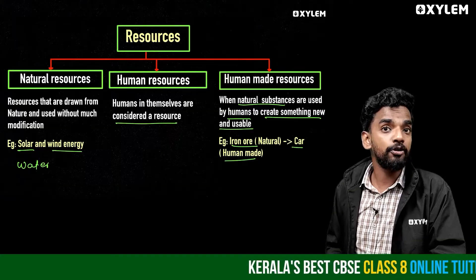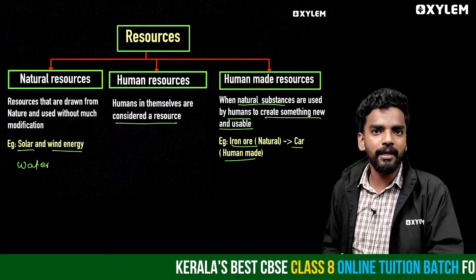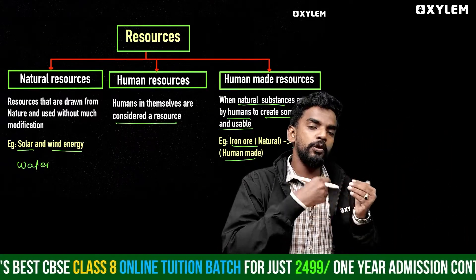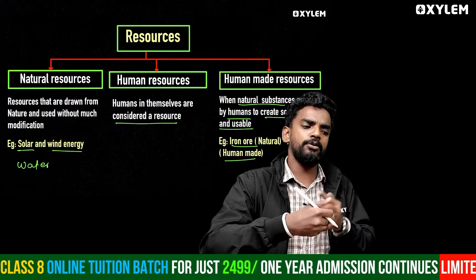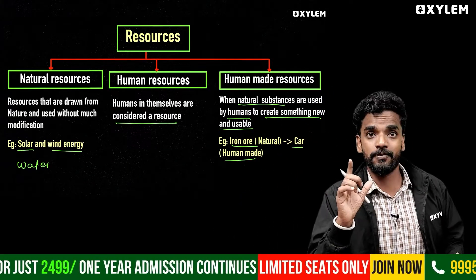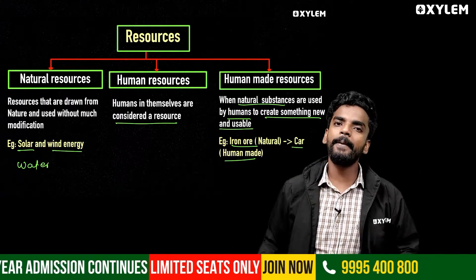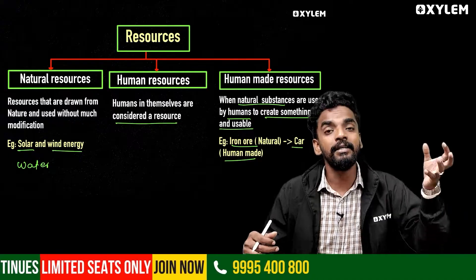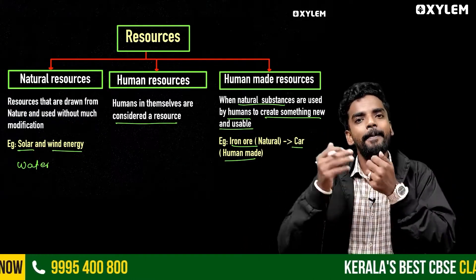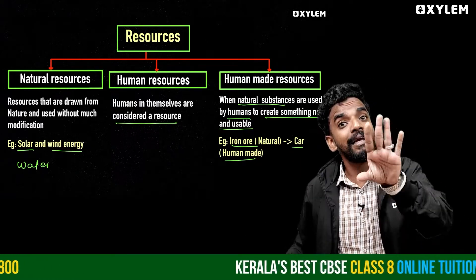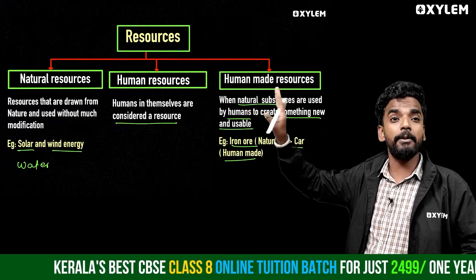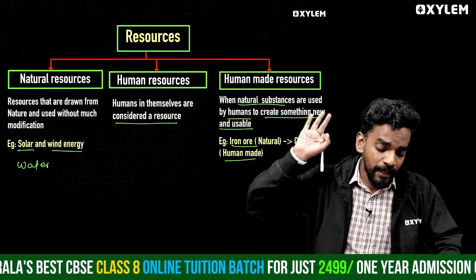For example, iron ore is a natural resource. But if we convert it into a car, it becomes a human-made resource. Another example is fruit — if we use it directly, it is a natural resource. But if we use technology and processing to create a juice or product, that becomes a human-made resource. A pen or mobile phone are human-made resources, since they are created from natural substances using human skill.